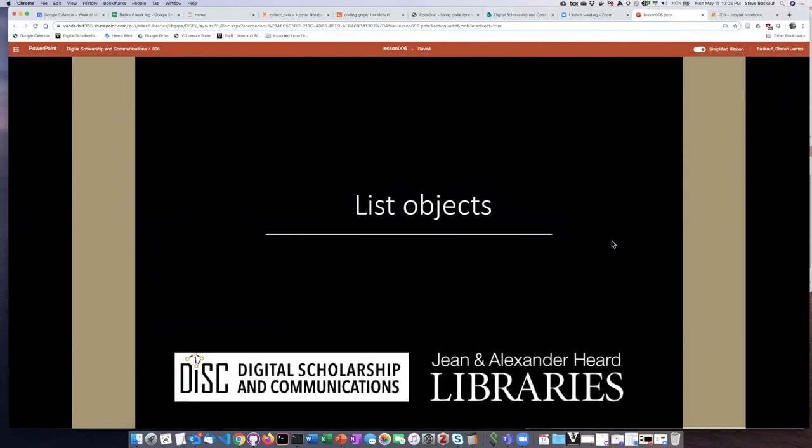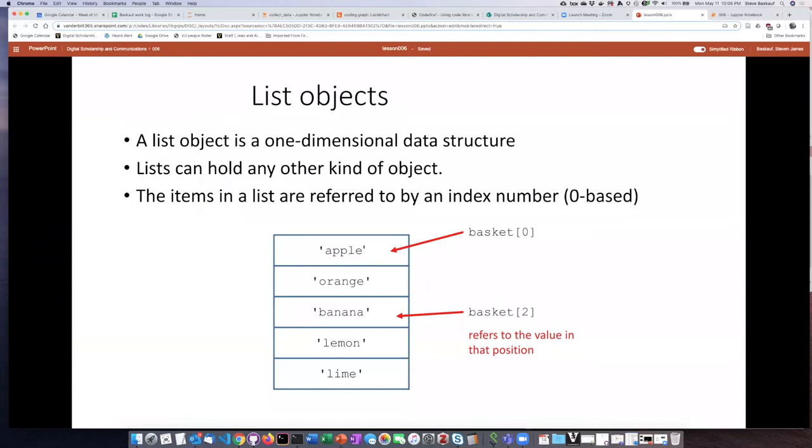So we'll begin by talking about list objects. A list object we could call a one-dimensional data structure. So there are a number of slots inside this data structure. Each one of those slots can hold an item. It turns out that lists can hold any other kind of object. So in the example I've shown here, the slots in the list are filled up with strings, but you could put numbers, booleans, or even mixed kinds of objects in there.